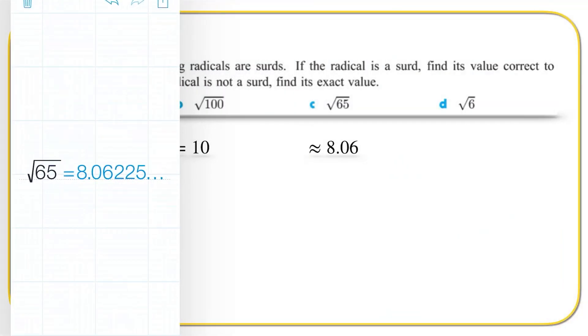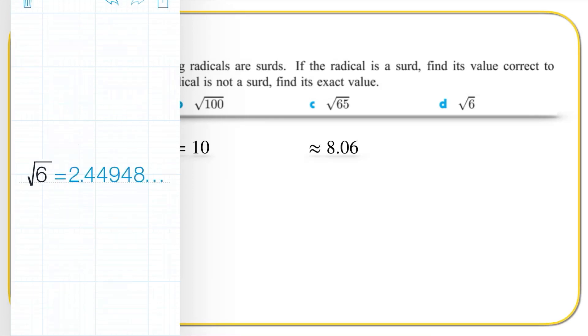Root of 6 — the root of 6 is equal to 2.44948, and let's remember that's just truncated, it carries on. So that means we can approximate it as 2.45.